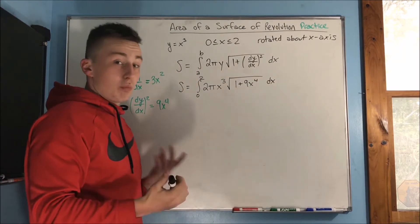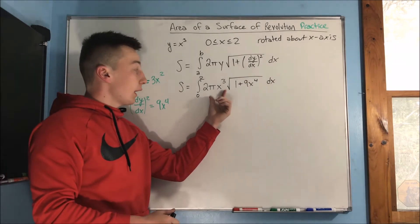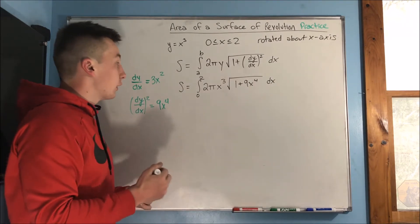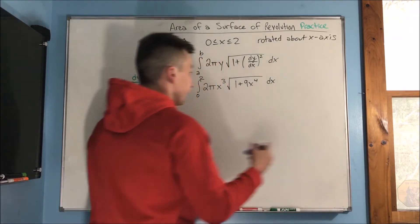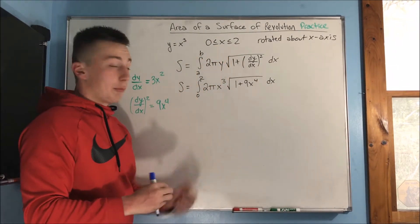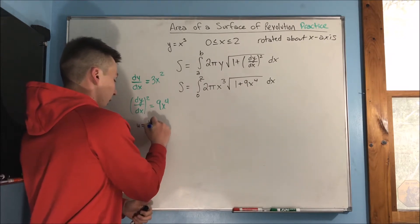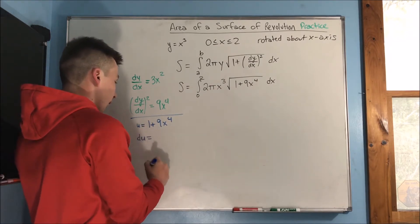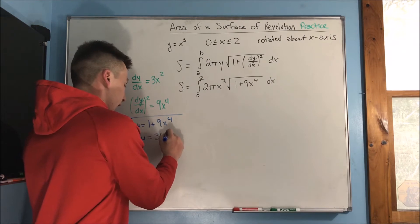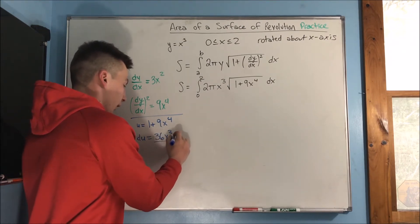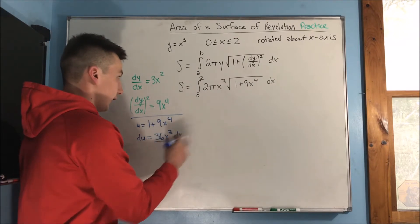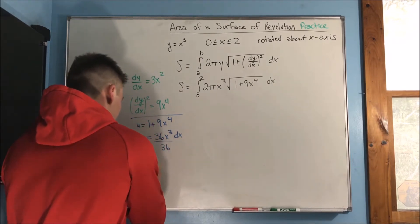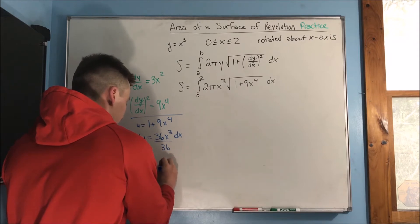Now, how can we integrate this? Luckily we have an x cubed right outside and we have that x to the 4th term right inside the radical, so it's great to do a u-substitution here. Our u would be 1 plus 9x to the 4th. That means that du would become 36x cubed. We don't have a 36 anywhere, so we can divide by 36, giving us du over 36 equals x cubed dx.